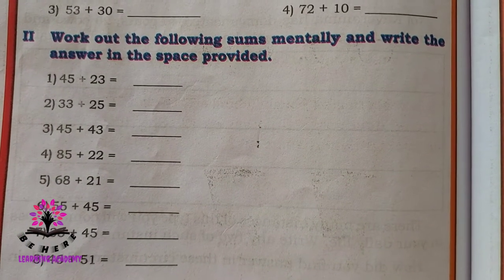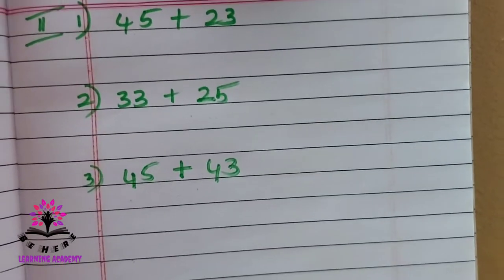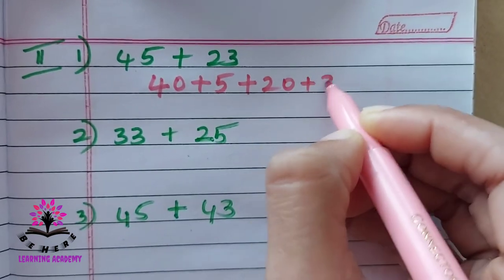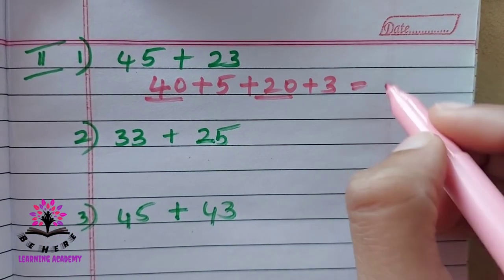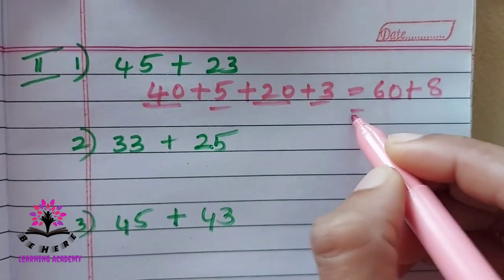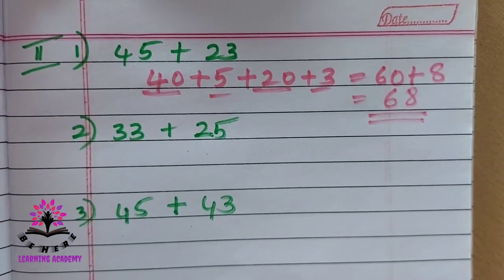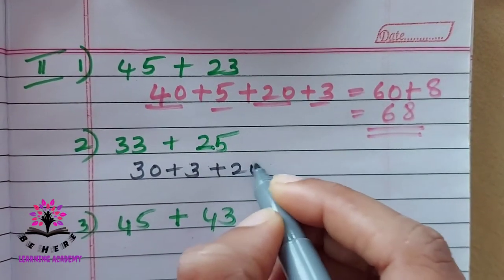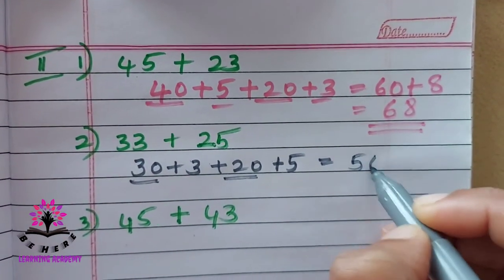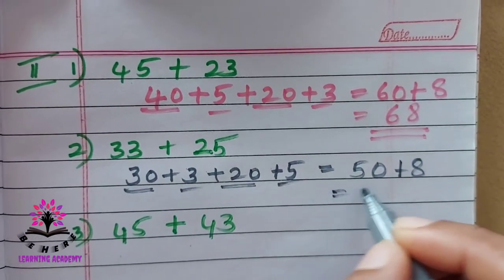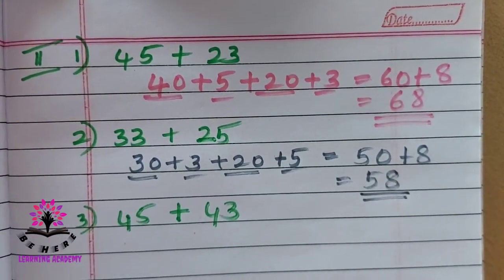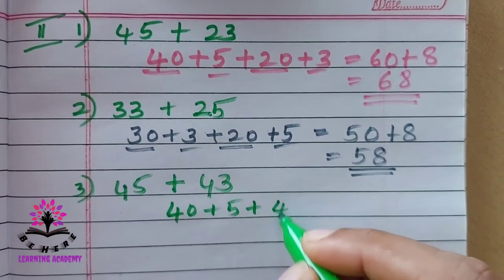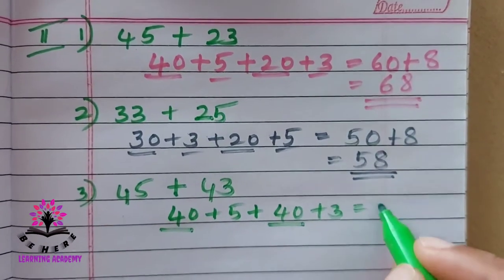Work out the following sums mentally and write the answers. First: 45 plus 23 — write as 40 plus 5 plus 20 plus 3. Then 40 plus 20 is 60, and 5 plus 3 is 8, so the answer is 68. Second: 33 plus 25 — write as 30 plus 3 plus 20 plus 5. Then 30 plus 20 is 50, and 3 plus 5 is 8, so the answer is 58. Next: 45 plus 43 — write as 40 plus 5 plus 40 plus 3. Then 40 plus 40 is 80.